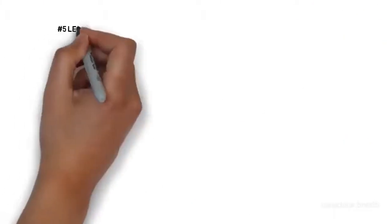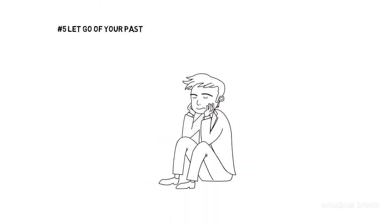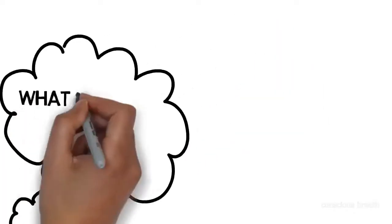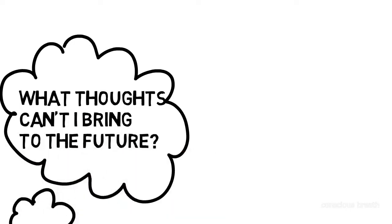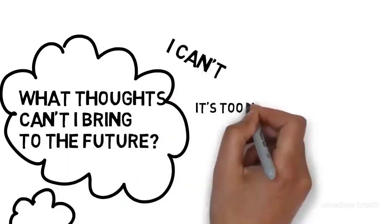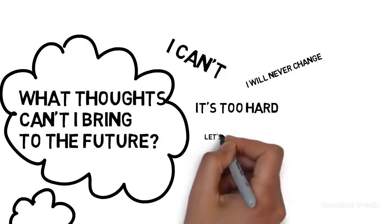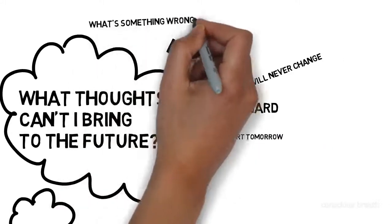Number five, you can't go to the future holding on to the biology of your past. Decide what thoughts you can bring to your future. Write them down. Thoughts like, I can't. It's too hard. I'll never change. I'll start tomorrow. What's wrong with me? It's someone else's fault.